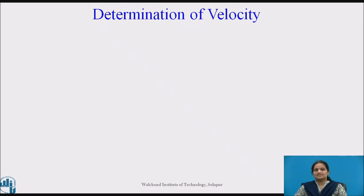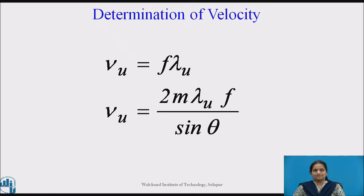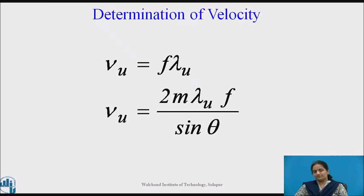This method is also used for the determination of velocity. First, the wavelength is determined using the values of λ, m, and θ in the equation. Then, the velocity of ultrasonic waves in the liquid v_u is computed from the relation v_u = f × λ_u. Therefore, v_u = 2mλf / sin θ, where f is the frequency of the ultrasonic waves, which is known as the frequency of the oscillator.